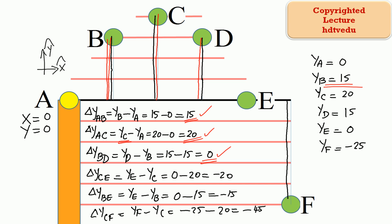What is the vertical displacement between points C and E? The final landing point is E, the initial point is C. We expect it to be negative because E is below C. The vertical position of point E is 0; the vertical position of point C is 20. So 0 minus 20 is negative 20.